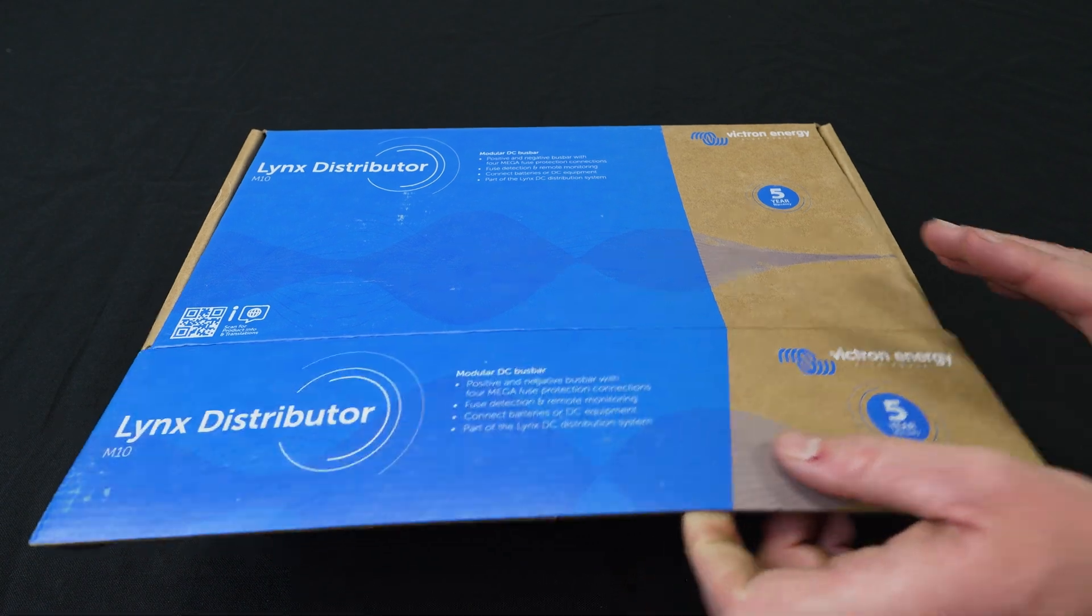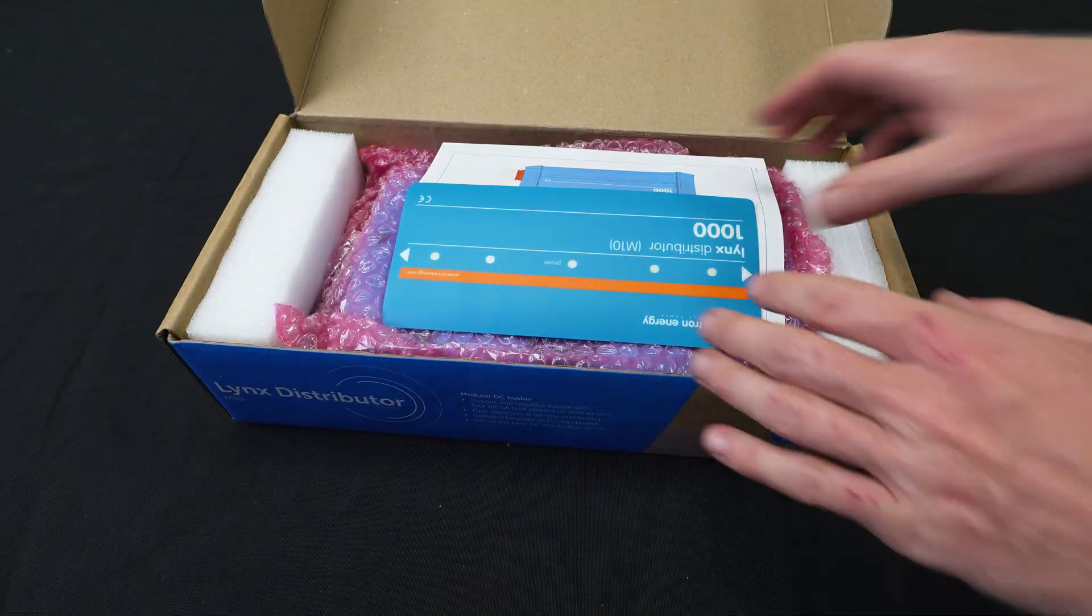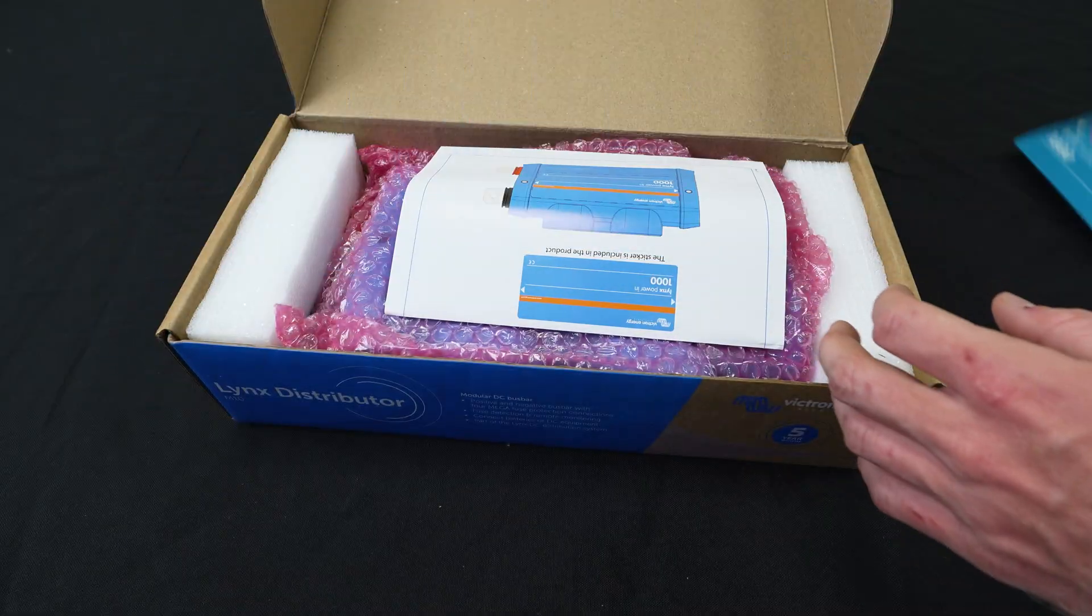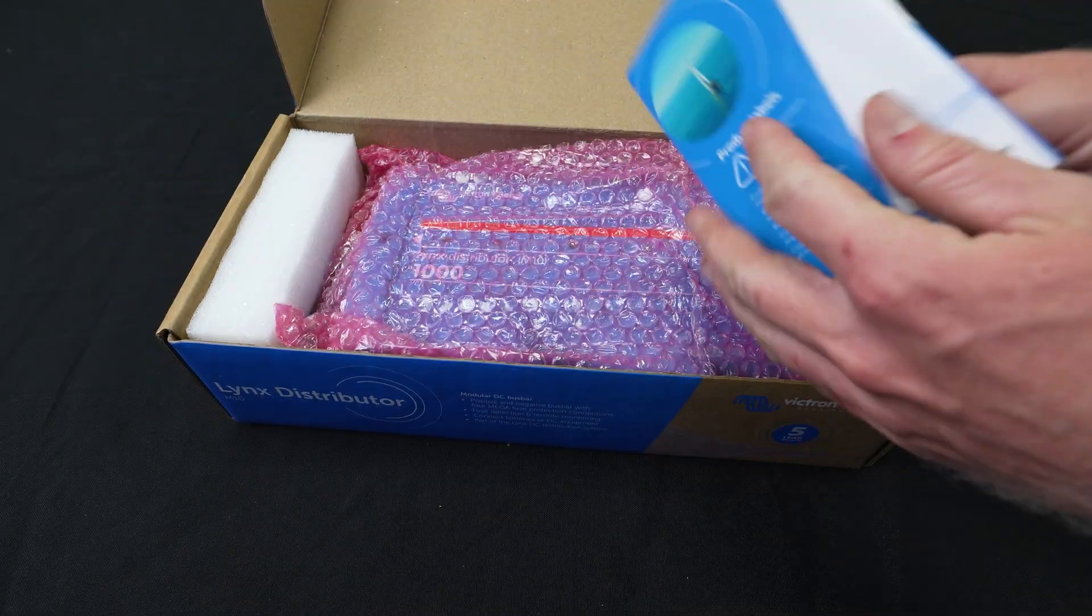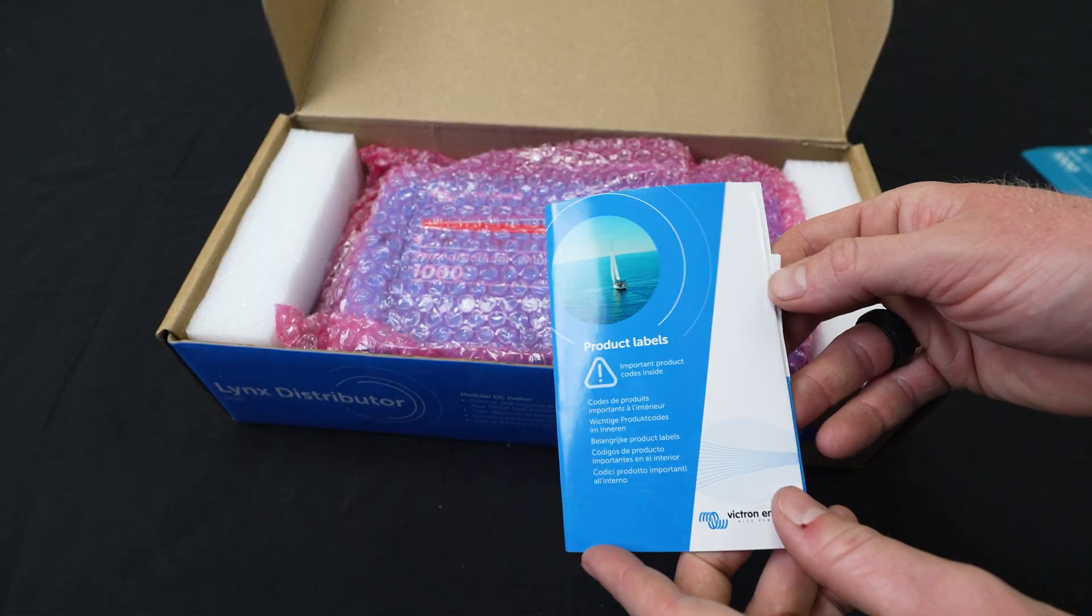All right, so in the box we've got our RJ12 cable, a sticker in case the unit needs to be installed upside down, and our product labels with our serial number and product number.